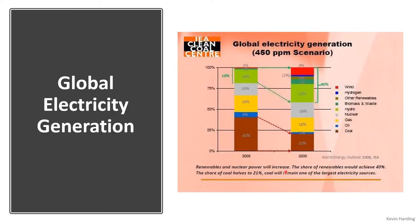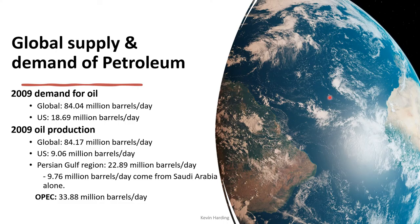Renewables and nuclear power are going to increase between 2006 and 2030. Coal as a total of our requirements is going to shrink down to 21% globally. Gas goes from 20 to 18%. But renewables in total go from 18% all the way up to 40% when we include wind, hydro, and biomass. Nuclear also increases from 15 to 18%.